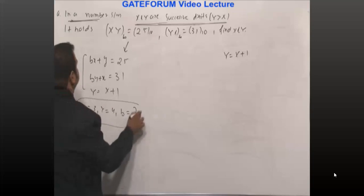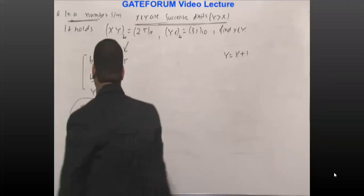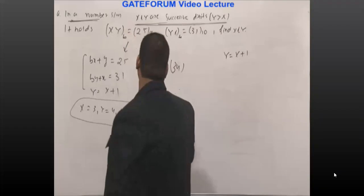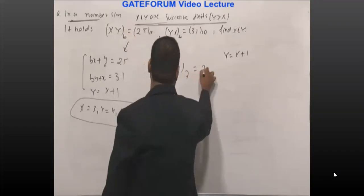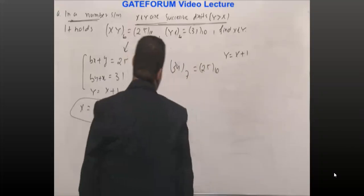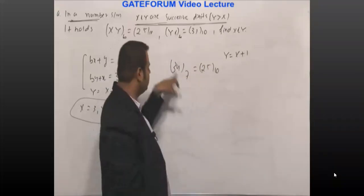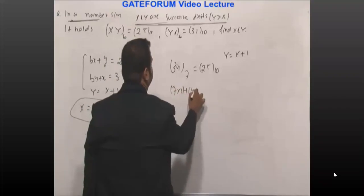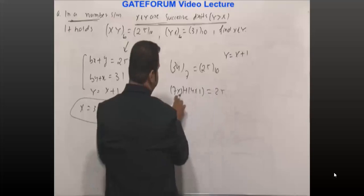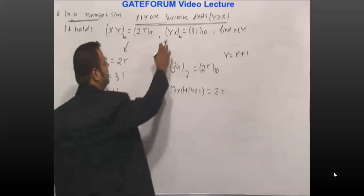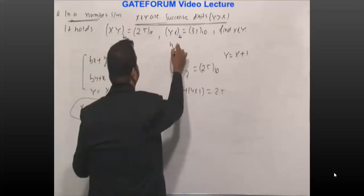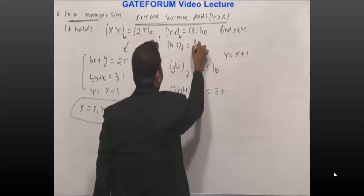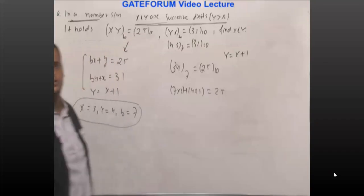We can cross-check: 34 base 7 = 7×3 + 4 = 21 + 4 = 25 base 10 ✓. And 43 base 7 = 7×4 + 3 = 28 + 3 = 31 base 10 ✓. So our solution x = 3, y = 4, b = 7 is confirmed correct.